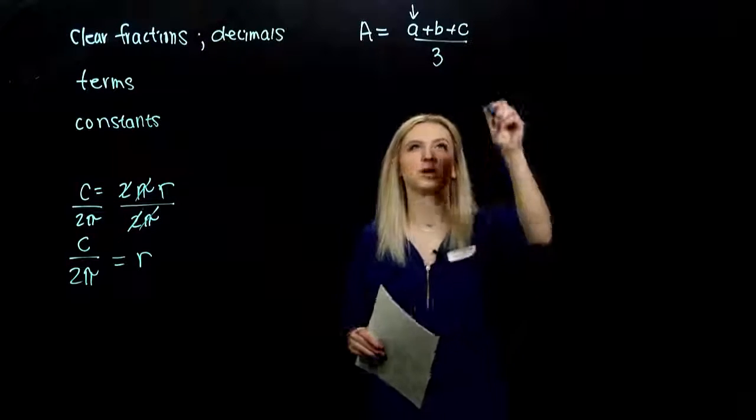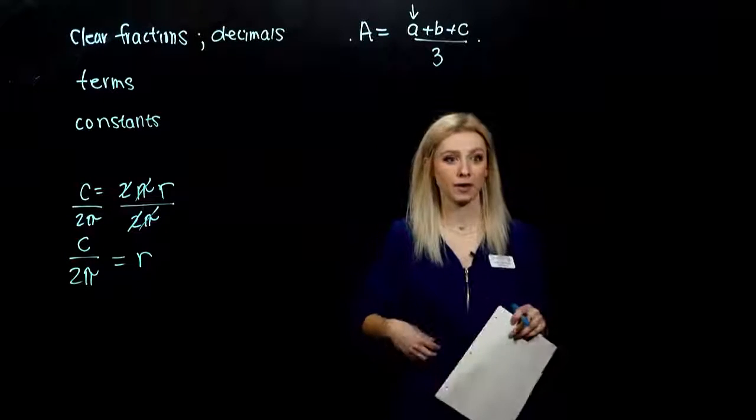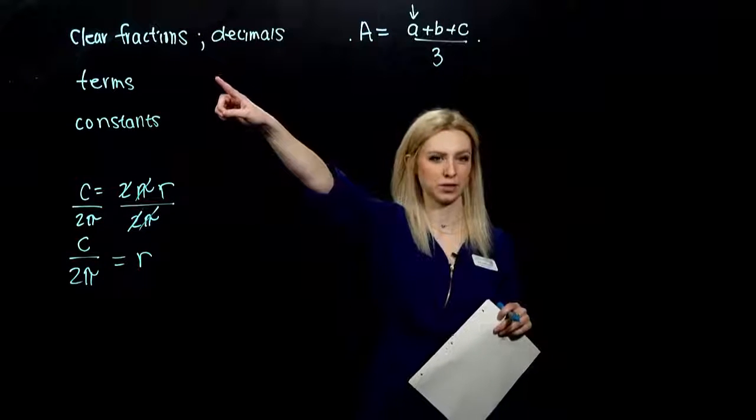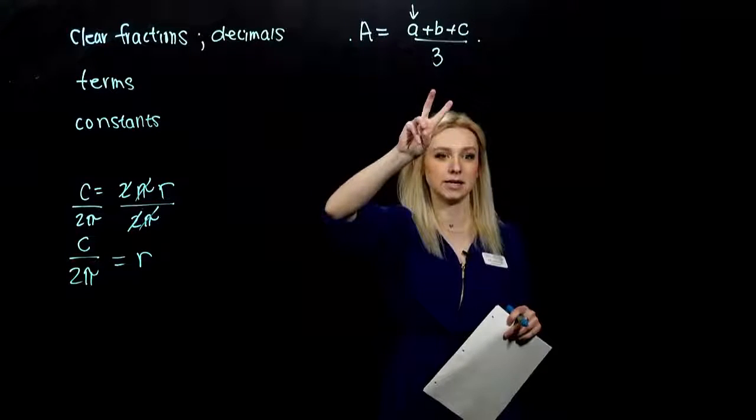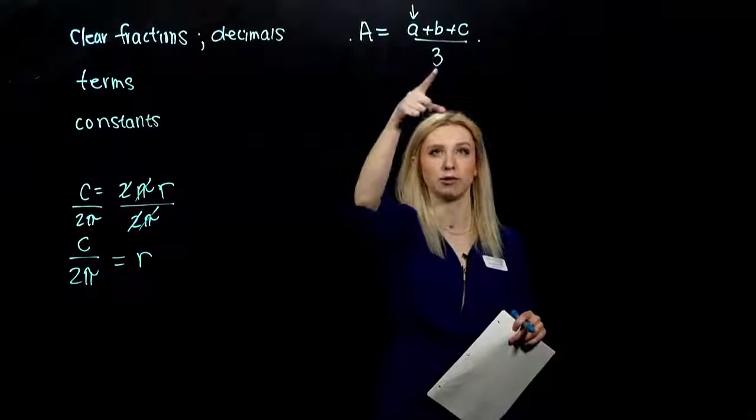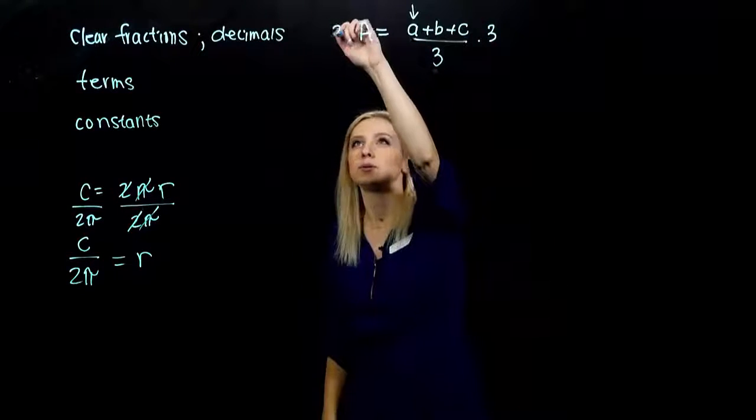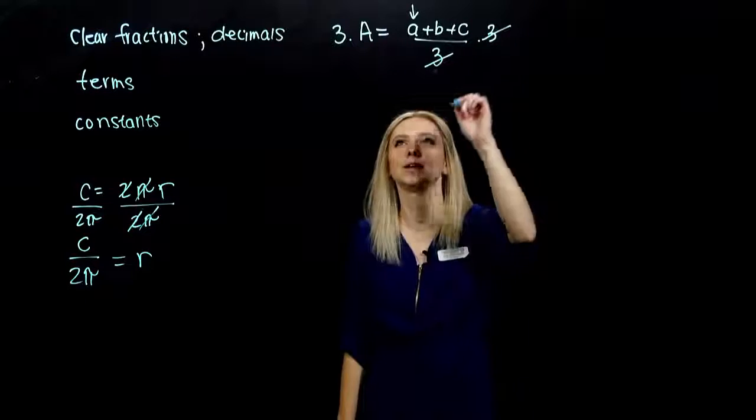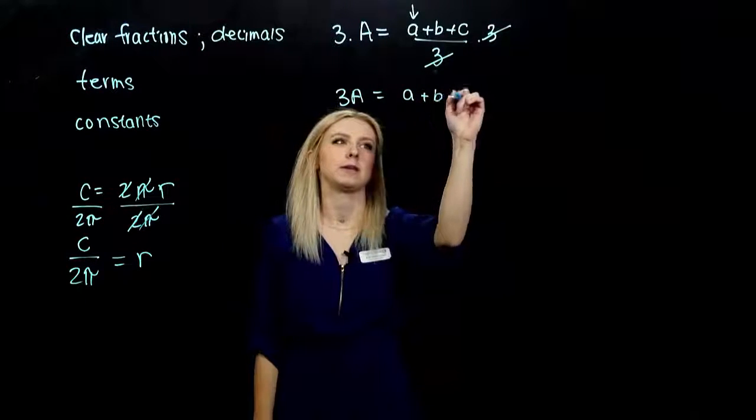So we need to multiply both sides by what? To get rid of the fractions. That's the first thing we always want to do. Get rid of the fractions. So LCD of both sides, one over here and three over here, is three. So if I multiply by three on both sides, it'll cancel over here. We'll be left with a plus b plus c.